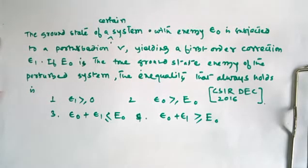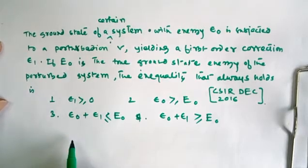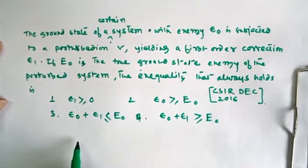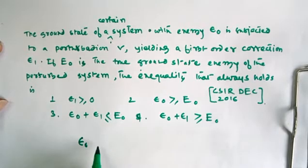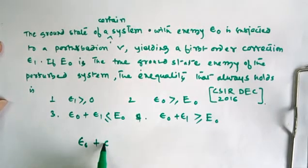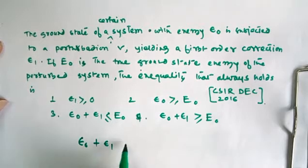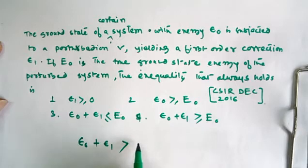This is the result of the perturbation theory. According to perturbation theory, the sum of the ground state zero-order and first-order correction is always greater than the ground state energy of the system.